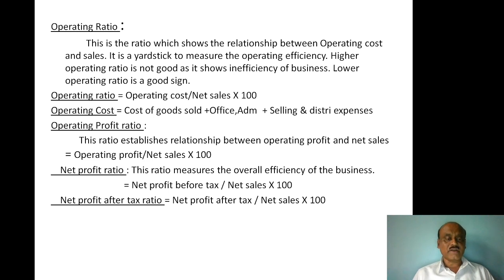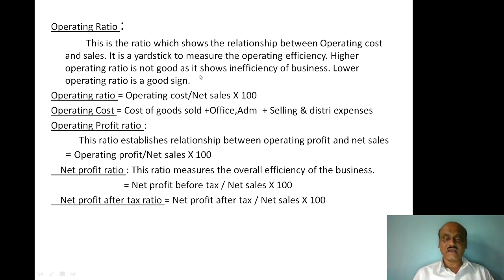Operating Ratio is the ratio which shows the relation between operating cost and sales. It is used to measure the operating efficiency of the business. A higher operating ratio is not good, as it shows inefficiency of the business. A lower operating ratio is a good sign.